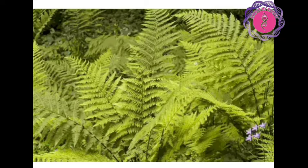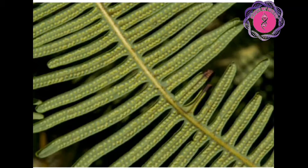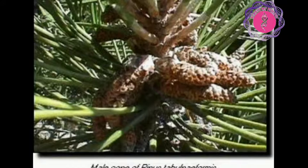Pteridophytes have differentiated body parts such as root, stem, and leaves. They have specialized tissue for conduction of water and other substances. For example, ferns and horse tail.